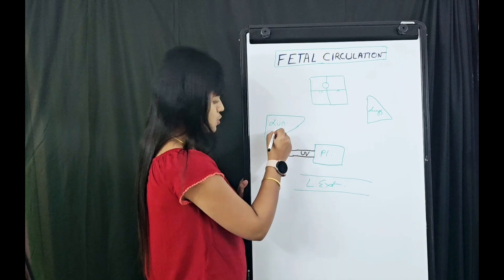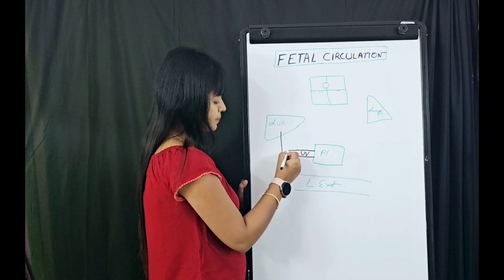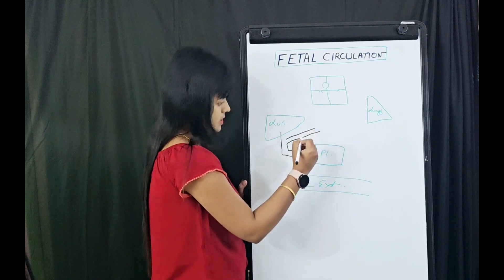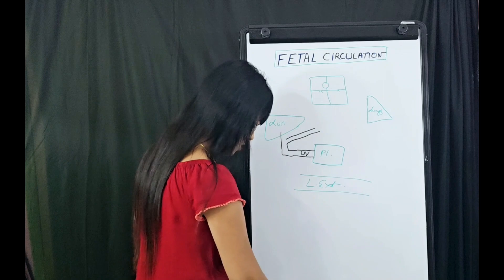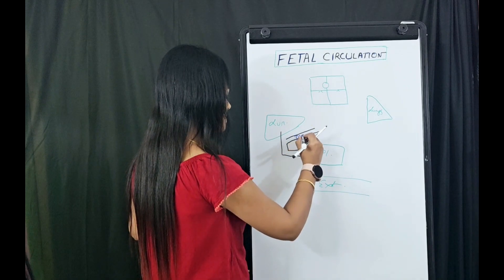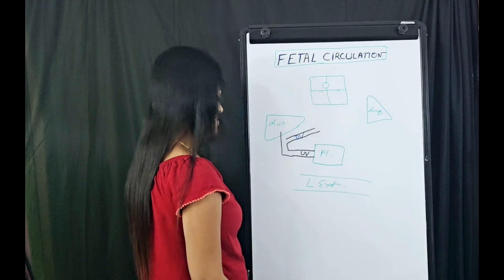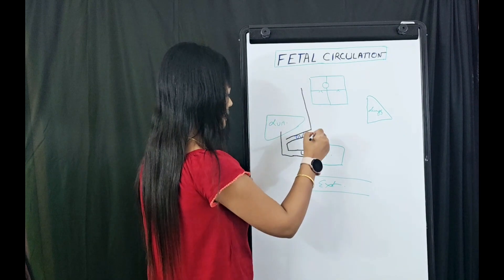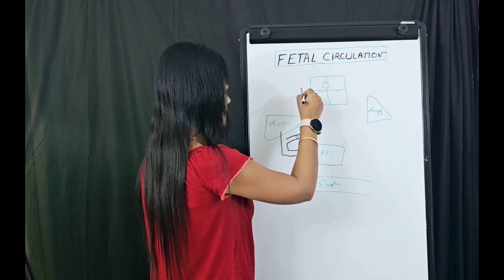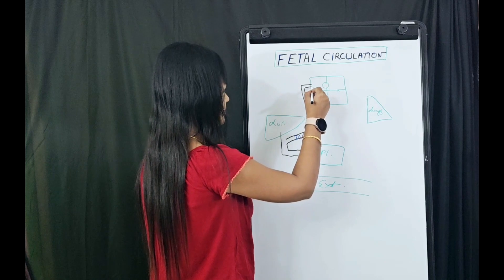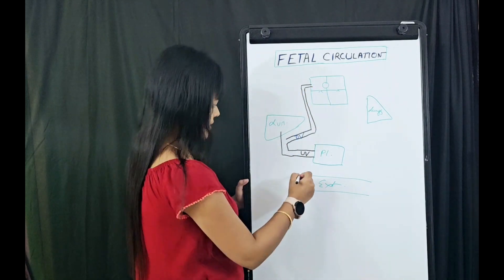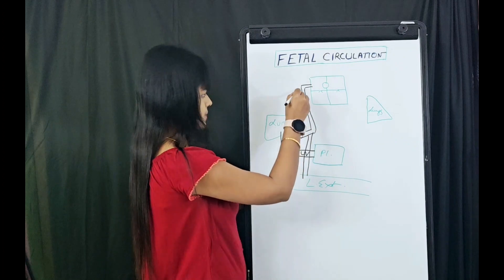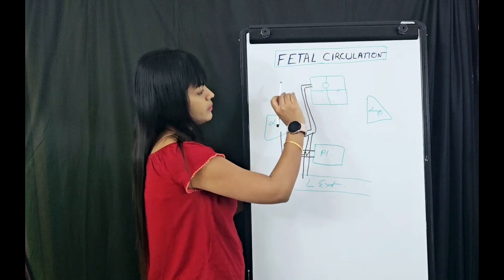From umbilicus, 50% of the blood is going to hepatic circulation. You can see it's going to liver, and 50% of the blood is getting shunted via ductus venosus. Here is the importance of ductus venosus: 50% blood is getting shunted via ductus venosus to the IVC, and the IVC is getting connected to the right atrium. From lower extremities also, the blood is going to IVC and then to the right atrium.